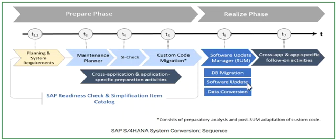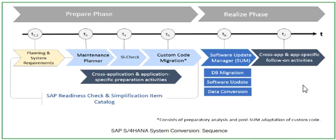The SUM tool performs the software update. The system is currently working with ERP software and it has to be converted to S4HANA. This software update is carried out by the SUM tool as part of the S4HANA conversion.